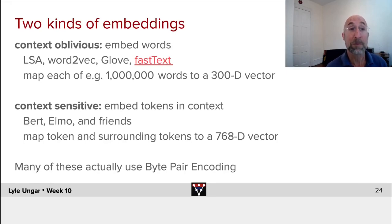I've said several times, but it's worth repeating. There are context-oblivious or context-free embeddings like latent semantic analysis or word2vec, GloVe, or fastText. Each of these maps every word in the vocabulary. I use typically 40,000 words at Penn. When I was at Google, I used a million unique words, maps each of these words to a 300-dimensional vector.